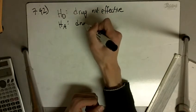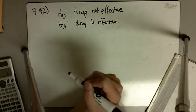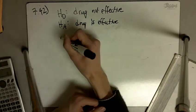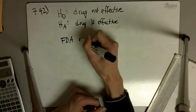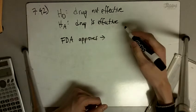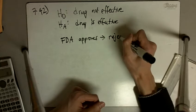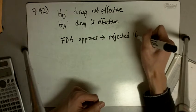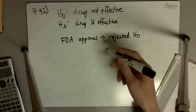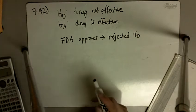If the FDA approves the drug, that means it came to the conclusion that it was effective. So that means they rejected the null hypothesis because they concluded that the drug is effective. That's what it means when the FDA approves the drug.